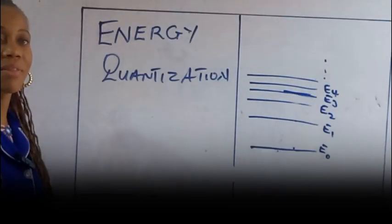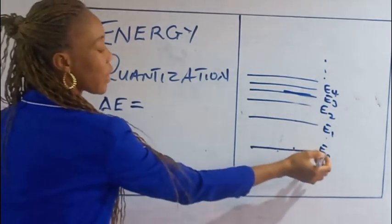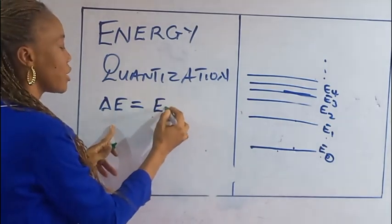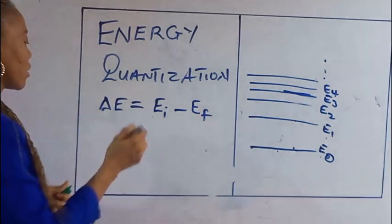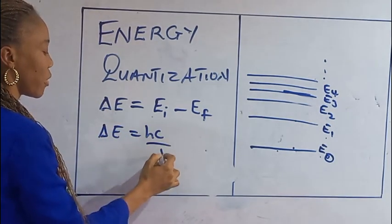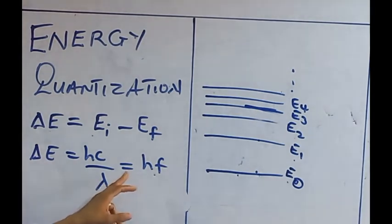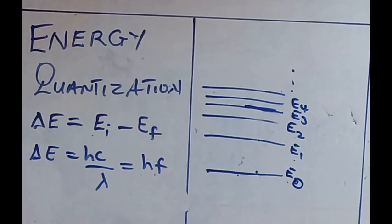Note that there are different energy levels — E1, E2, E3 — and the ground state is the zero energy level. The change in energy equals the initial energy minus the final energy. Since this equals hc upon lambda or hf, the greater the energy change, the greater the frequency. Energy is directly proportional to frequency.